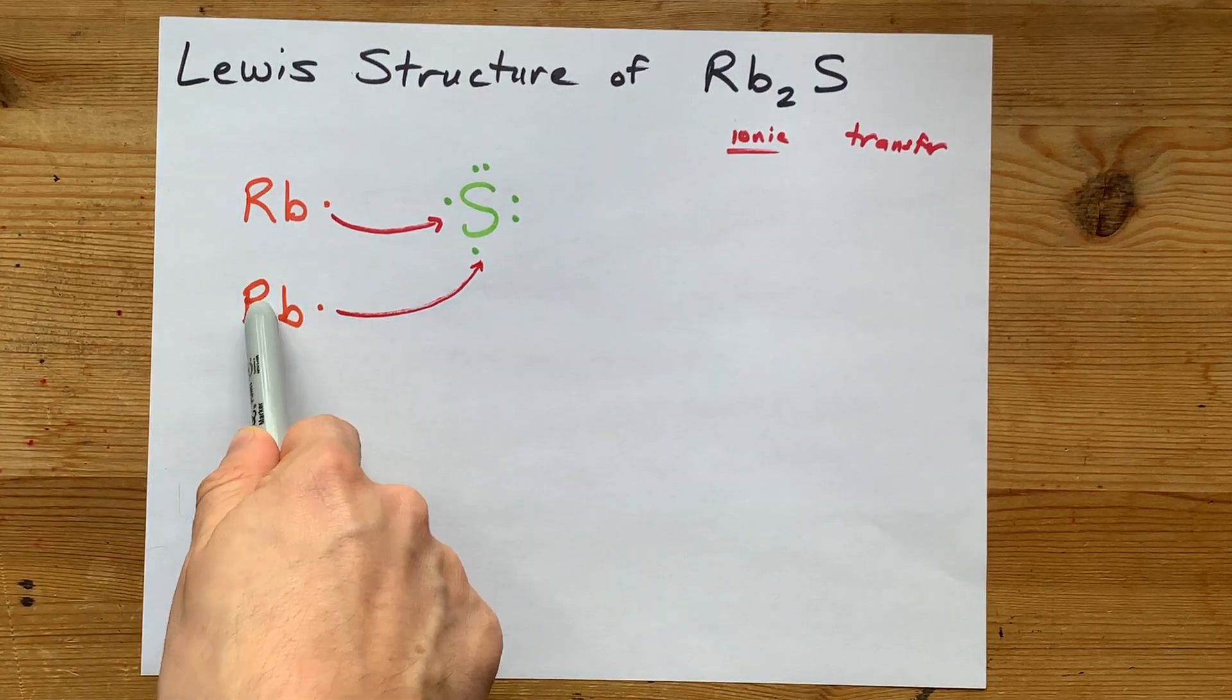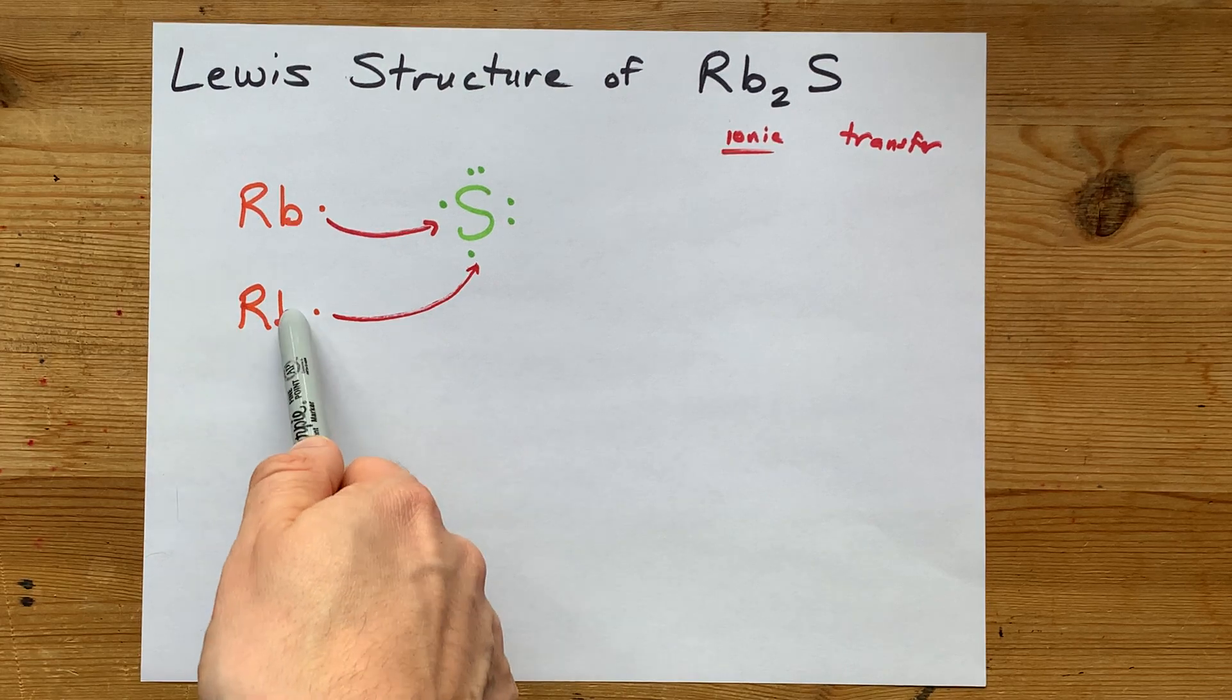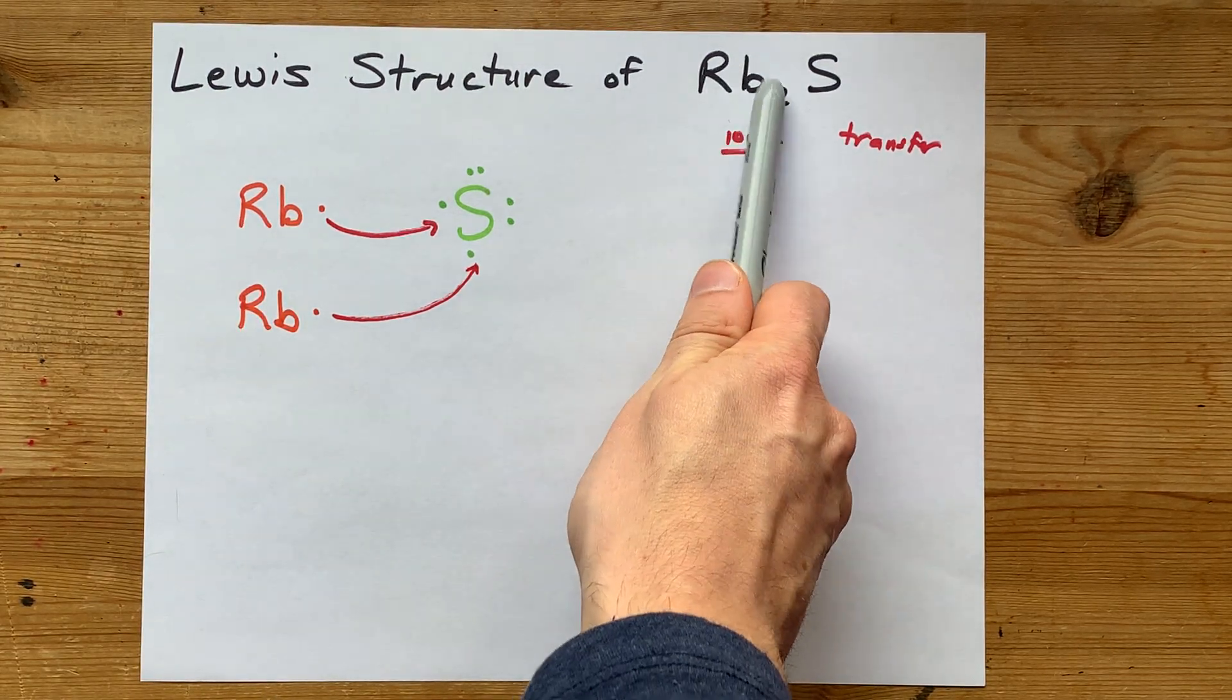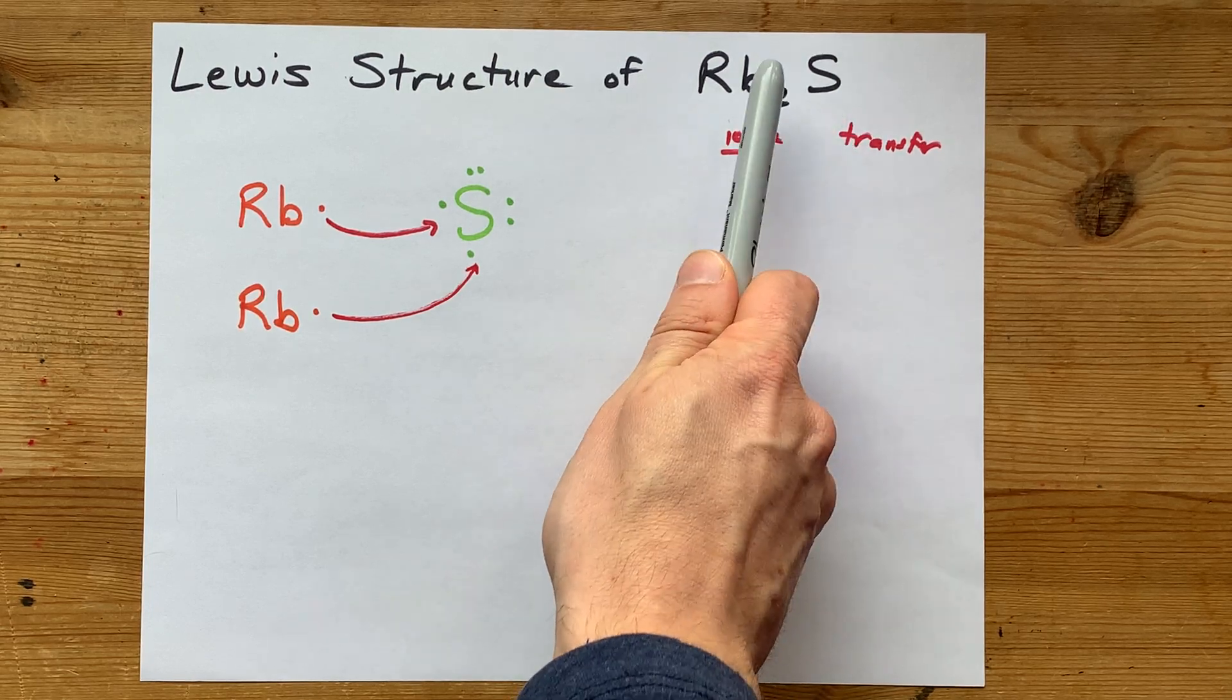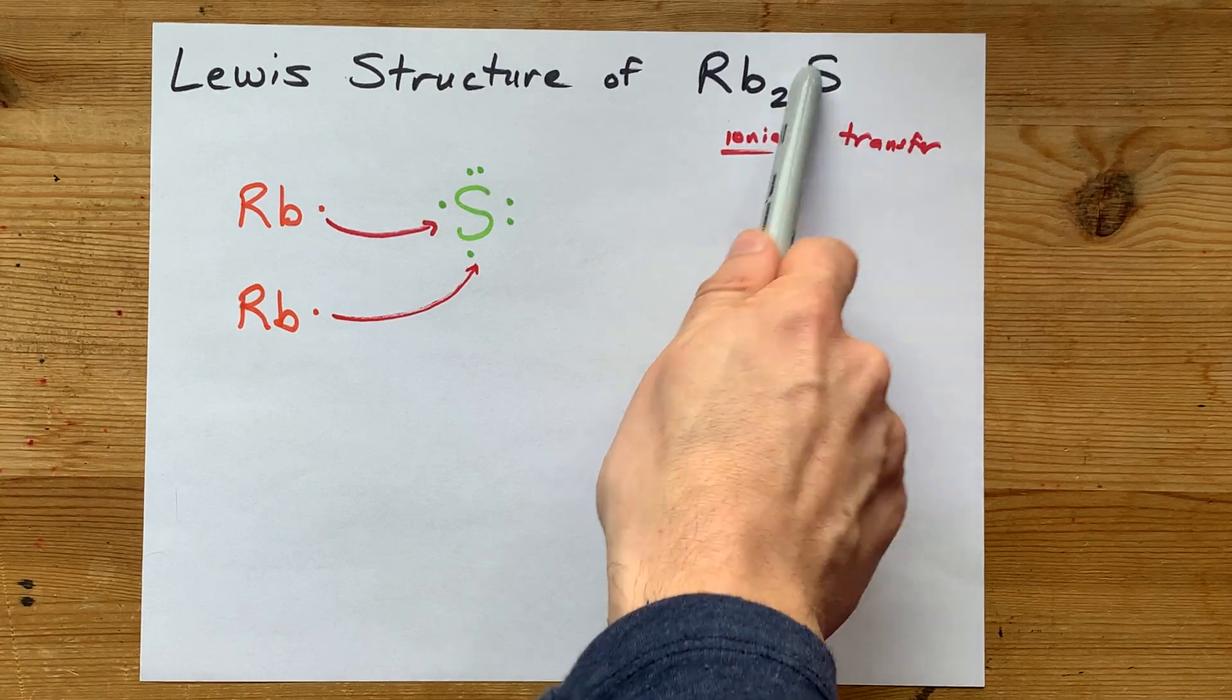The fact that you need 2 rubidiums to complete the octet of sulfur, because each rubidium is only giving away 1 electron each, is the reason the formula is Rb₂S. You need 2 of these to cancel charges with the sulfur.